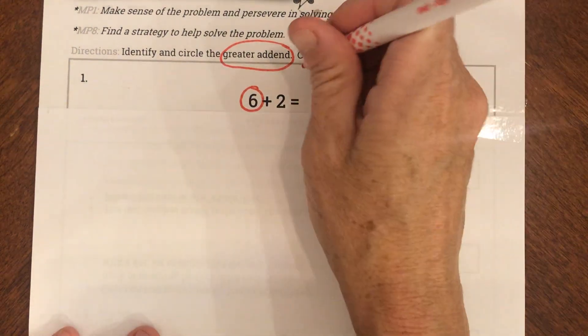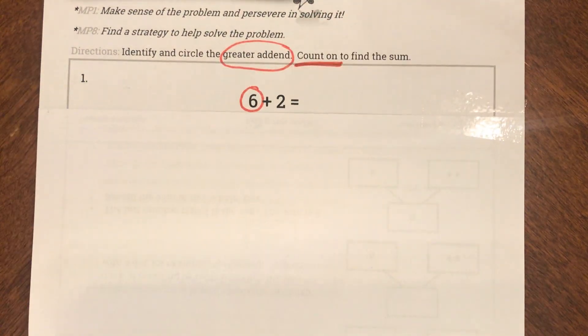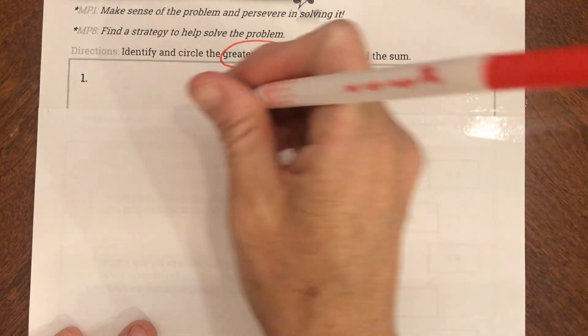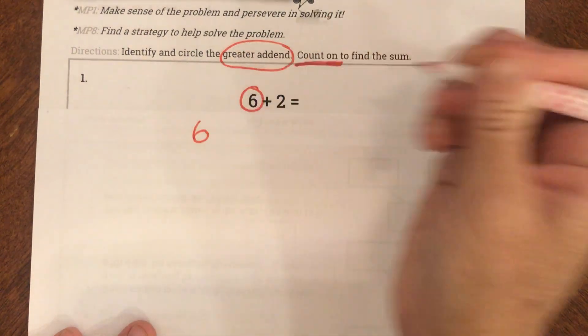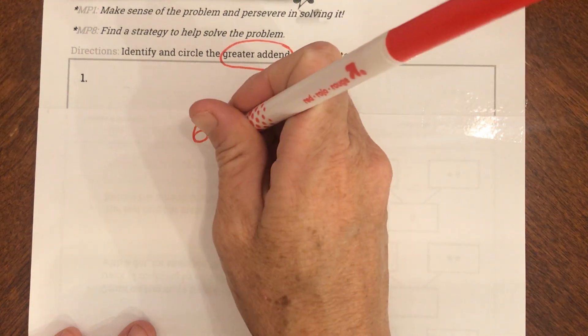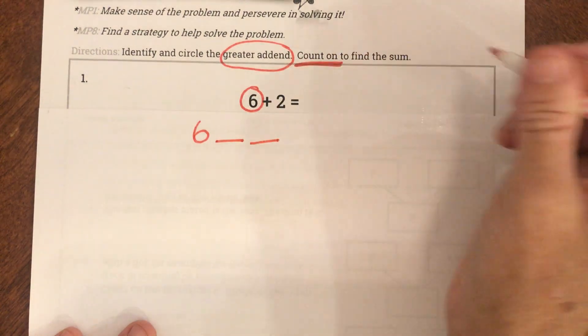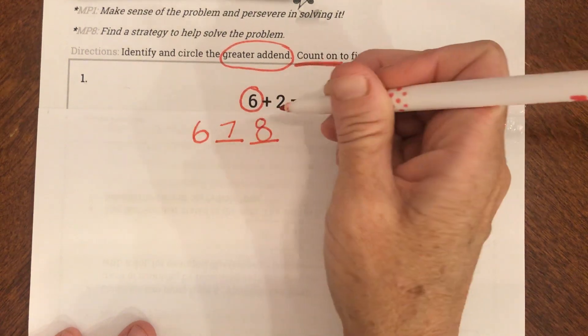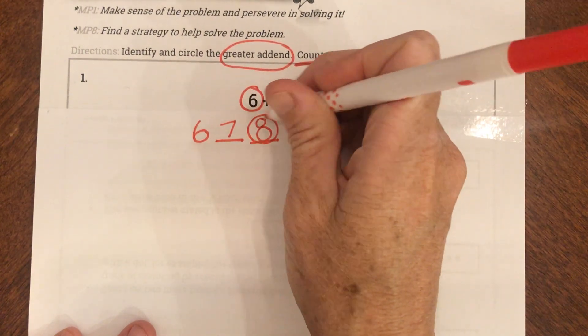Then they want me to do my strategy which is called count on. So if I start at 6, if I start at 6 boys and girls and I count on 2 more, what comes next? What comes next? 6, 7, 8. 8 is my answer.